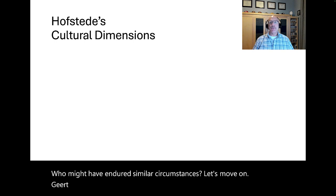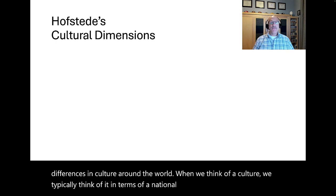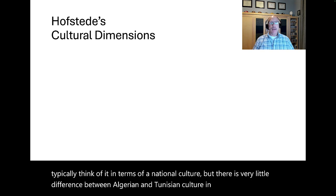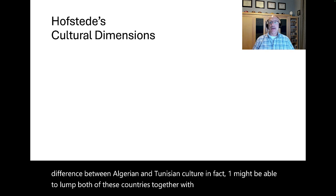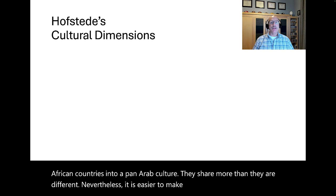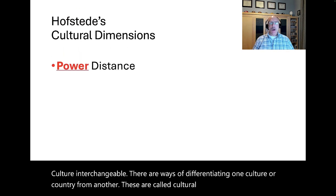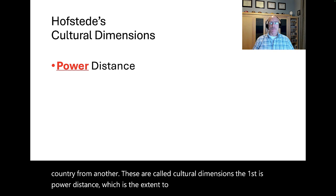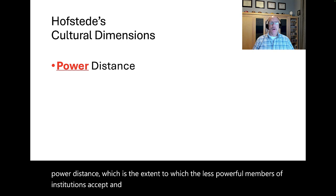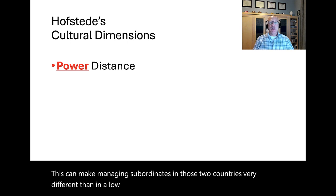Geert Hofstede is considered the world's preeminent authority on differences in culture around the world. When we think of a culture, we typically think of it in terms of a national culture, though cultures can overlap — for example, Algeria, Tunisia, and Libya might be lumped together into a pan-Arab culture. There are ways of differentiating one culture or country from another, called cultural dimensions. The first is power distance — the extent to which the less powerful members of institutions accept and expect that power will be distributed unequally. In high power distance countries like Mexico or India, people accept and expect vast power differences, making managing subordinates very different than in low power distance countries like Sweden or the USA.